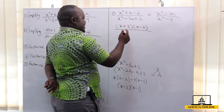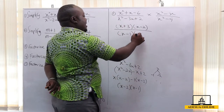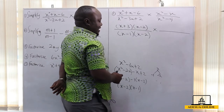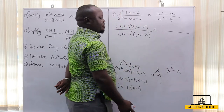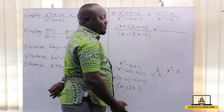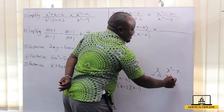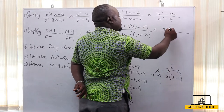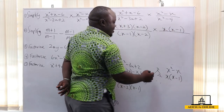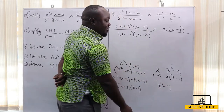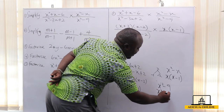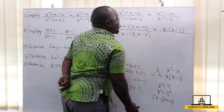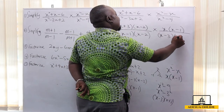Now for the numerator x² - x: there is no constant term, so we look for the common variable. x is common, so factorizing x out gives x(x - 1). And for x² - 9, this is the difference of two squares — x² - 3². So that gives us (x - 3)(x + 3).